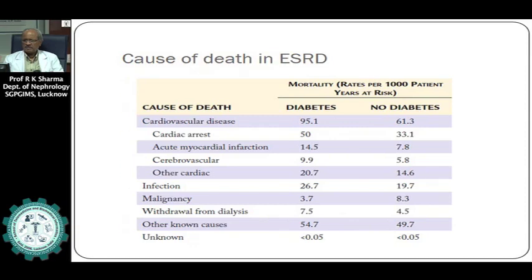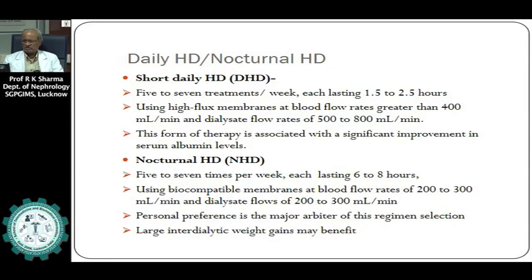Venous access is generally used for acute dialysis using double-lumen venous catheters, which can be cuffed or uncuffed, inserted into larger veins such as the internal jugular vein, subclavian vein, or femoral vein.